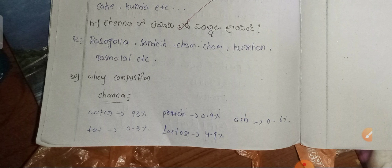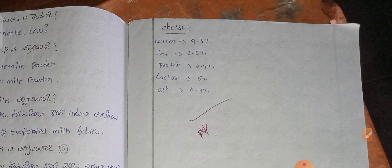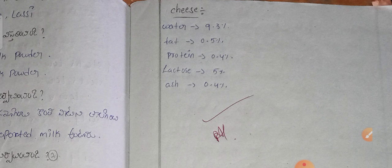This is the composition of milk: Water 93%, Fat 0.3%, Protein 0.9%, Lactose 4.9%, Ash 0.6%. Cheese composition: Water 9.3%, Fat 0.5%, Protein 0.4%, Lactose 5%, Ash 0.4%.